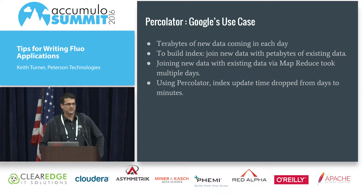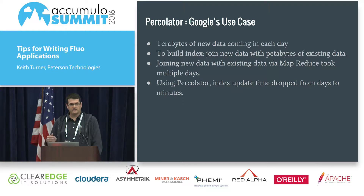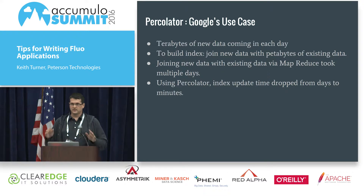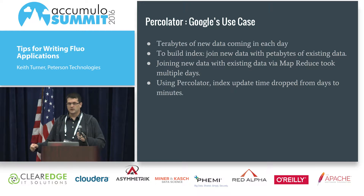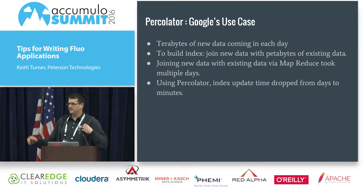Fluo is based on something called Percolator from Google. Google created Percolator to lower the latency for when things would be searchable. They had terabytes of crawl data coming in every day and a petabyte-scale copy of the web. They used to run hundreds of MapReduce jobs to rebuild their index, meaning a crawled document wouldn't be available for search for at least three days. With Percolator, they lowered that latency from days to minutes.